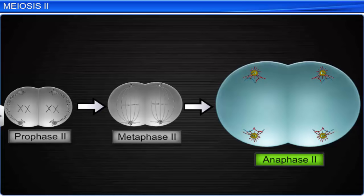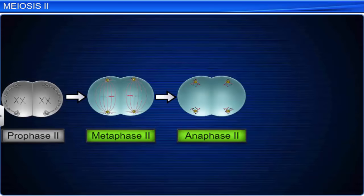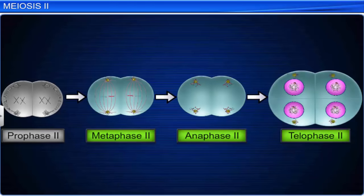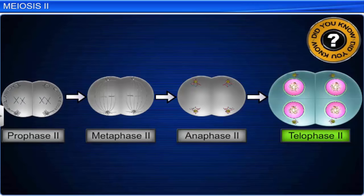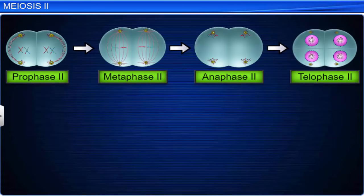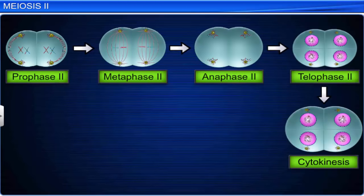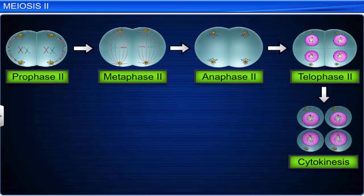The final phase of meiosis 2 is telophase 2. During this phase, the chromosomes reach the opposite poles and a new nucleus with a nuclear membrane is organized at each pole. All four nuclei differ from each other in genetic aspects due to the crossing over in prophase 1. Telophase 2 is generally followed by cytokinesis, during which the cytoplasm in each cell is equally divided, resulting in the formation of four haploid daughter cells.